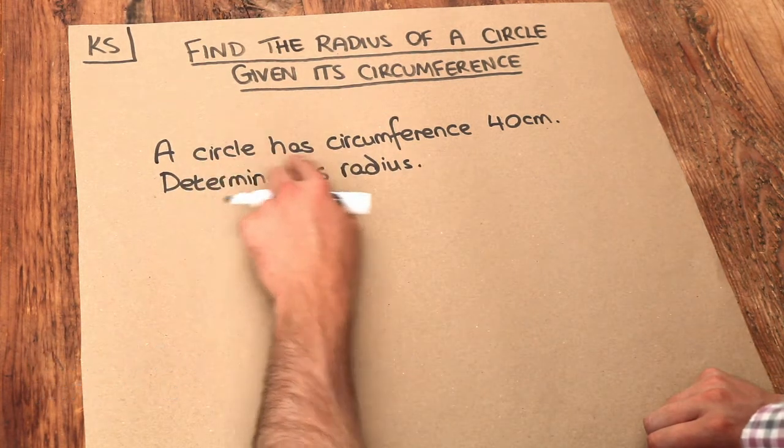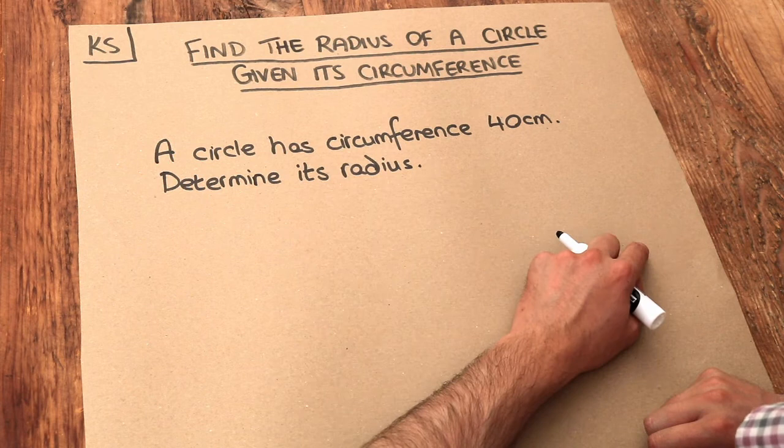And we have this problem here. A circle has circumference 40 centimeters. Determine its radius.